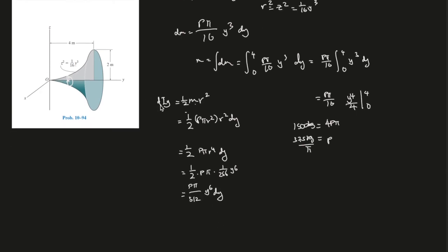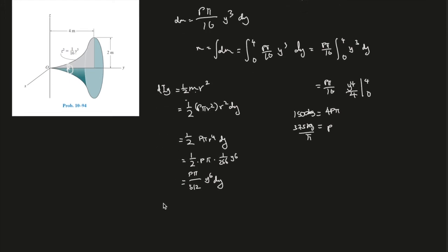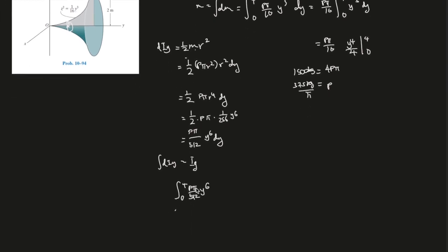Remember, this is d inertia of y, inertia, moment of inertia in the y-axis, where we have to take the integral of this. Take the integral of this gives you the real moment of inertia. So, we have to take the integral of ρ, this, y to the power of 6, and this is, again, from 0 to 4, right? That is what the y value is all about.